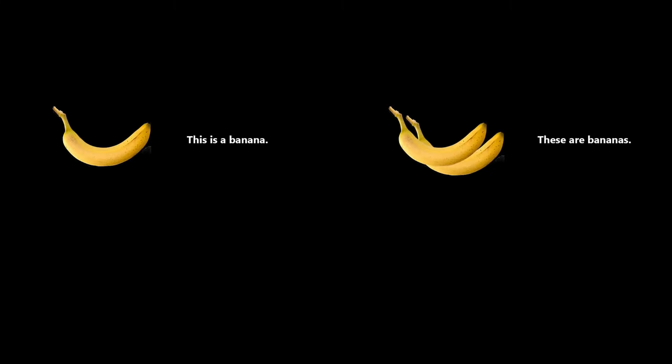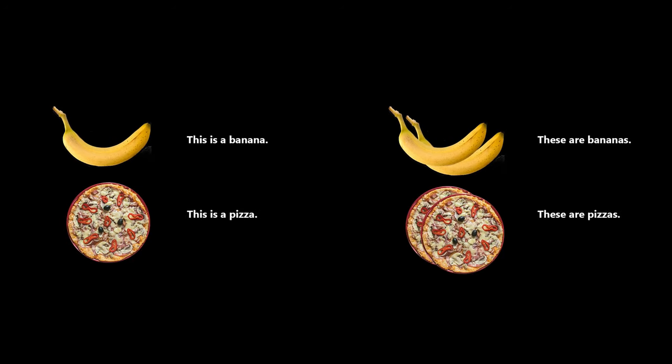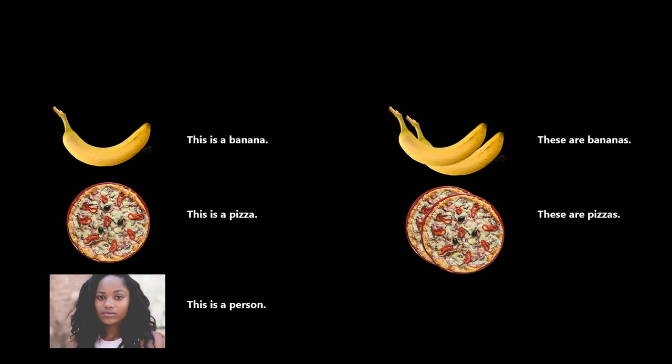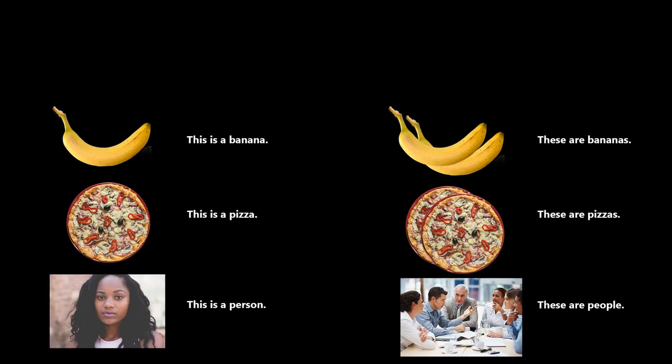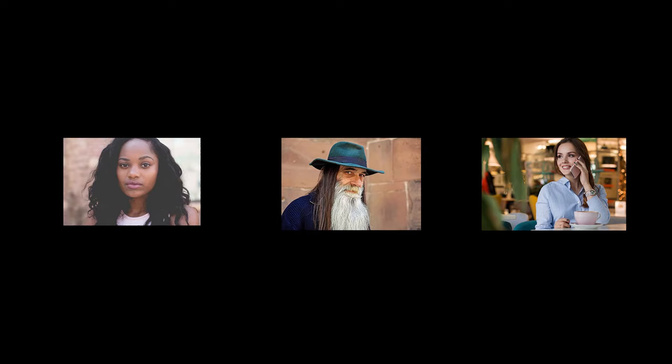This is a banana. These are bananas. This is a pizza. These are pizzas. This is a person. These are people. These things are all countable nouns — they are things we can count. One banana, two bananas, three bananas. One pizza, two pizzas, three pizzas. One person, two people, three people.